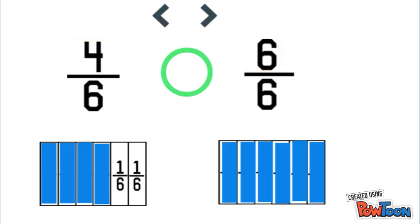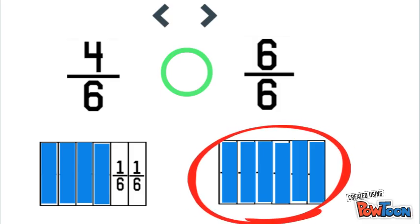And now, we can already see that six sixths is greater because it has more shaded in, and also because its numerator is greater than four. So we want to use the symbol that is chomping down on six sixths to compare these. So we'll use this symbol, and we'll read this from left to right and say four sixths is less than six sixths.